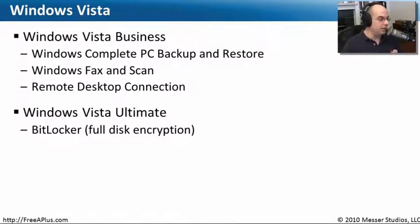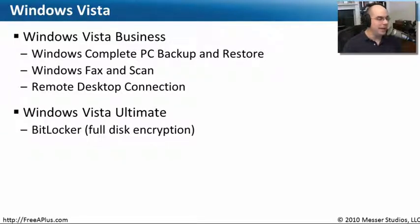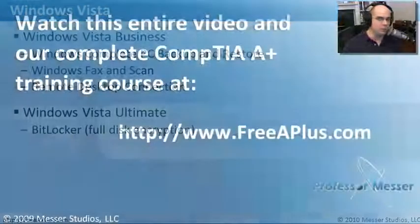There's an ultimate version called Windows Vista Ultimate that has all of those things, but it also includes an extra capability called BitLocker, which allows you to do full disk encryption. This is very often used for USB keys, because those are so portable and you could lose one. Whoever found that USB drive would have access to everything on it, unless you were using BitLocker. You can tell Windows Vista Ultimate to always encrypt an entire drive, so if anyone plugged it in they would not have access to your encrypted, private data on that portable drive.